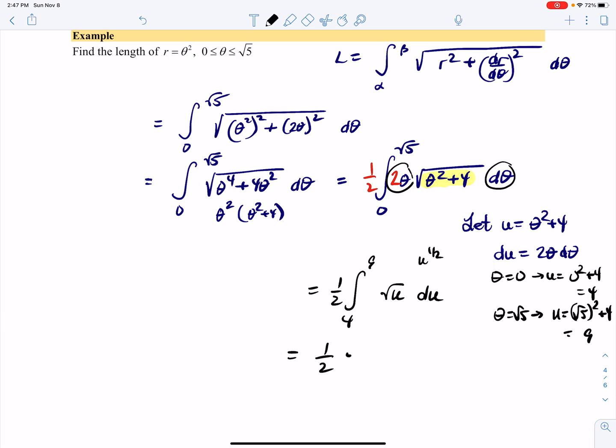So that means u^(3/2), moving up one power, then divide by 3/2, which means multiply by 2/3, evaluated from 9 to 4.